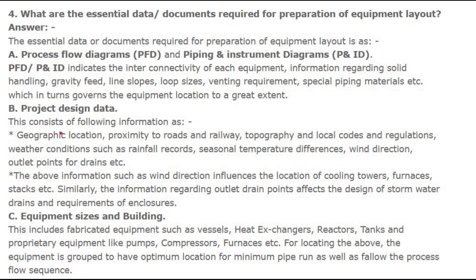...which in turn governs the equipment location to a great extent. b. Project design data — this consists of: geographic location, proximity to roads and railway, topography and local codes and regulations, weather conditions such as rainfall records, seasonal temperature differences, wind direction, outlet points for drains, etc. The above information, such as wind direction, influences the location of cooling towers, furnaces, stacks, etc.